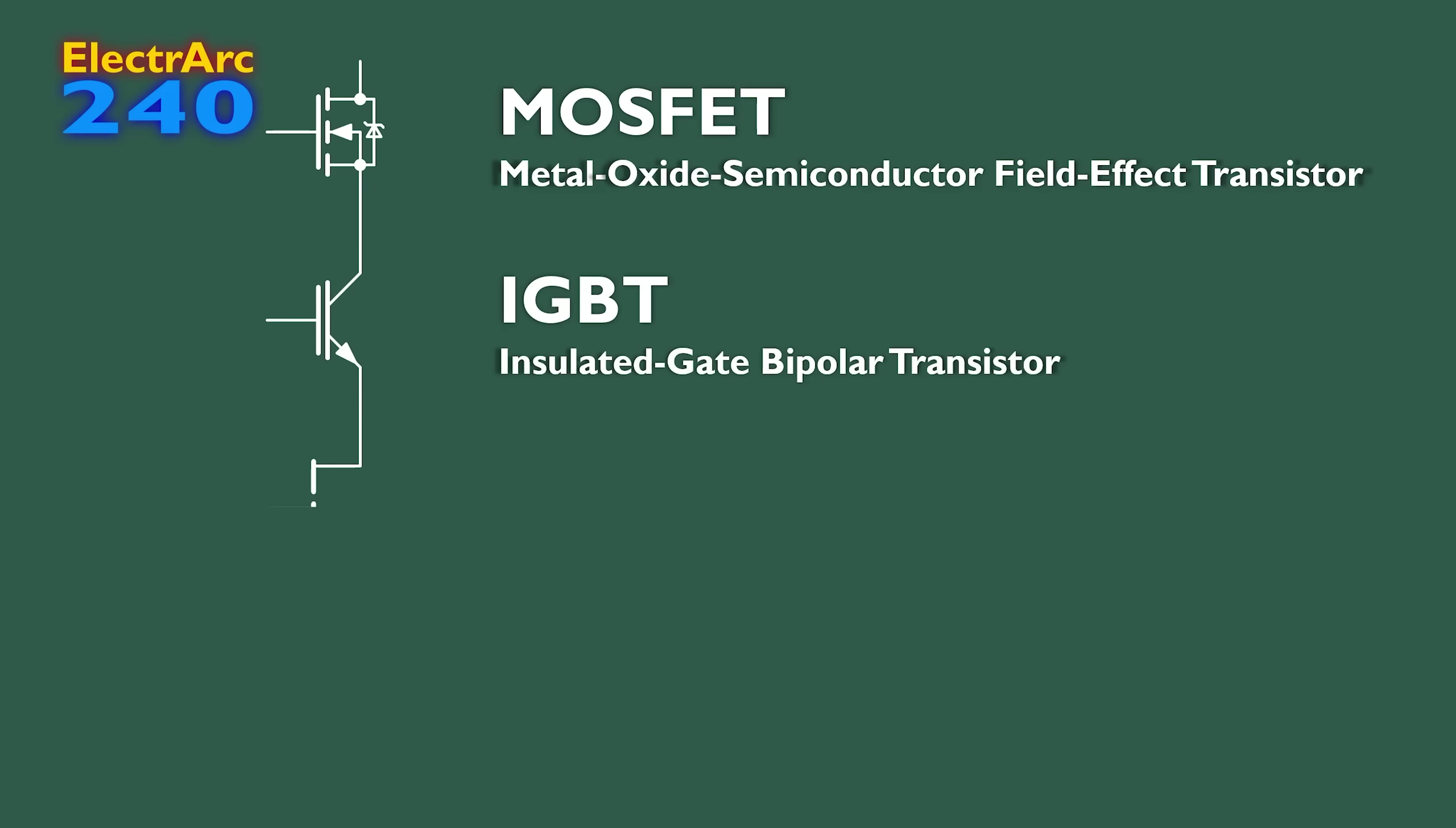The vast majority of power electronic converters currently produced use MOSFETs as their switching devices, so this is what we'll be using. Other potential switching devices include IGBTs, HEMTs, and if you're feeling adventurous, BJTs.